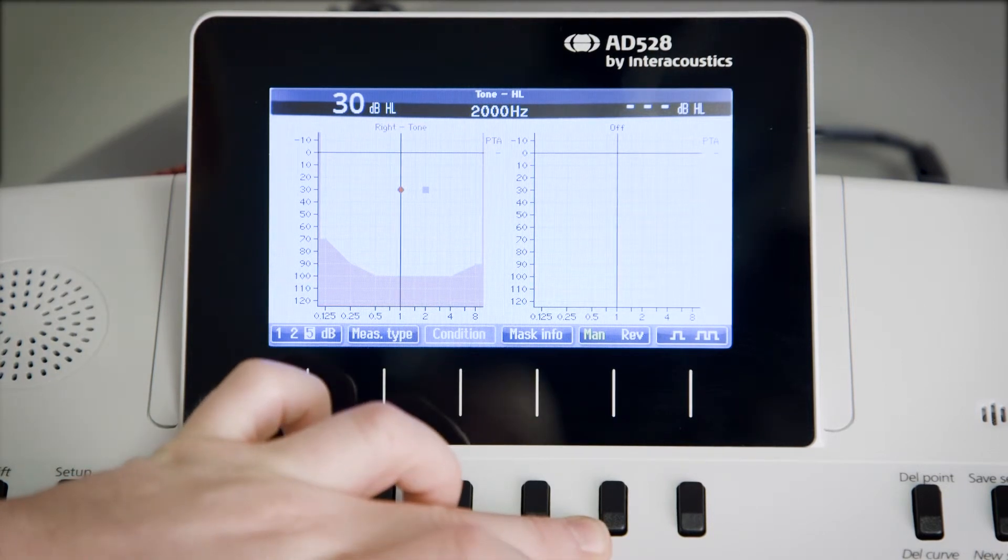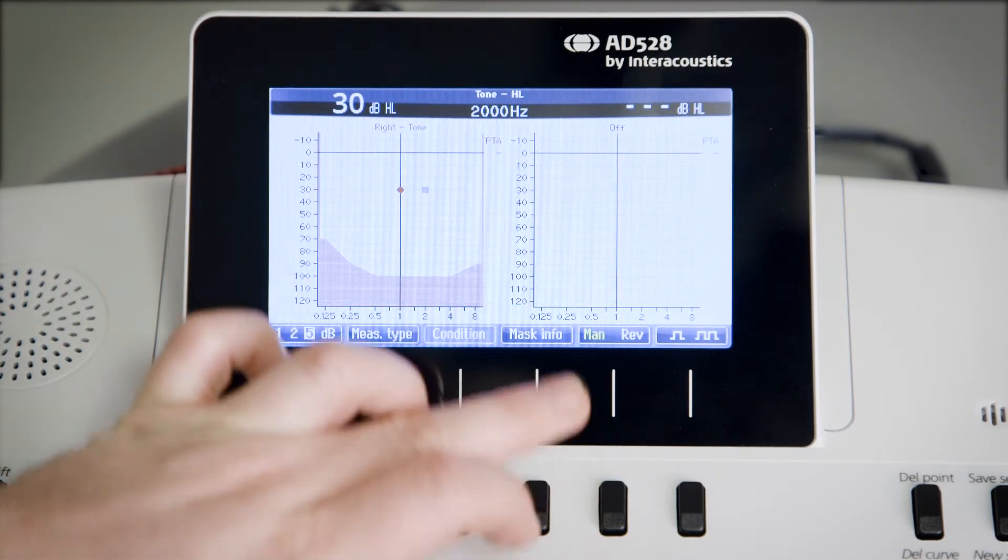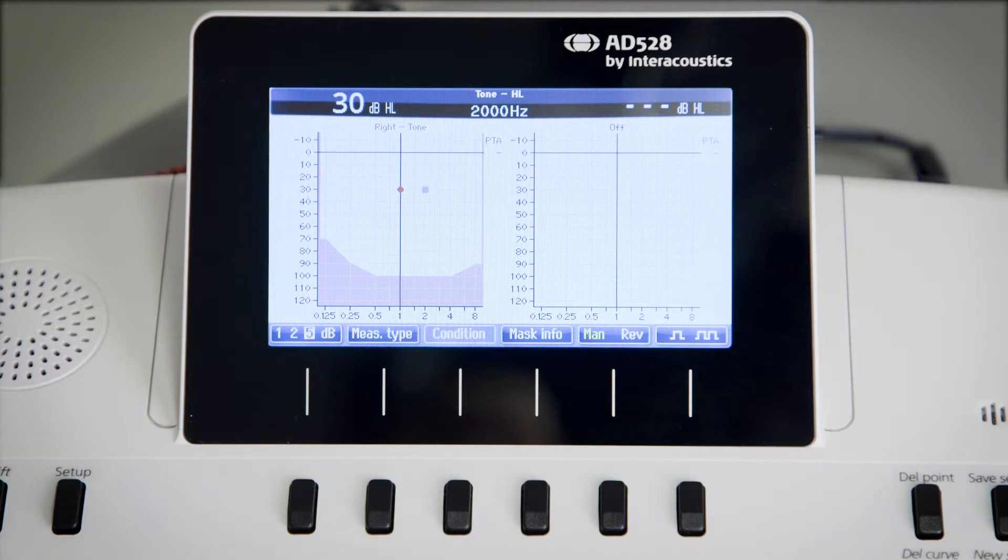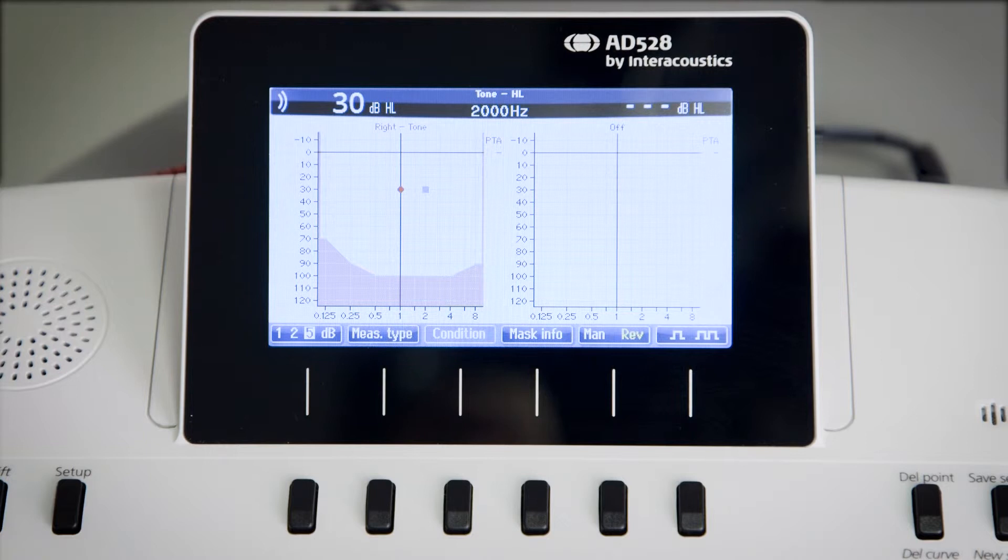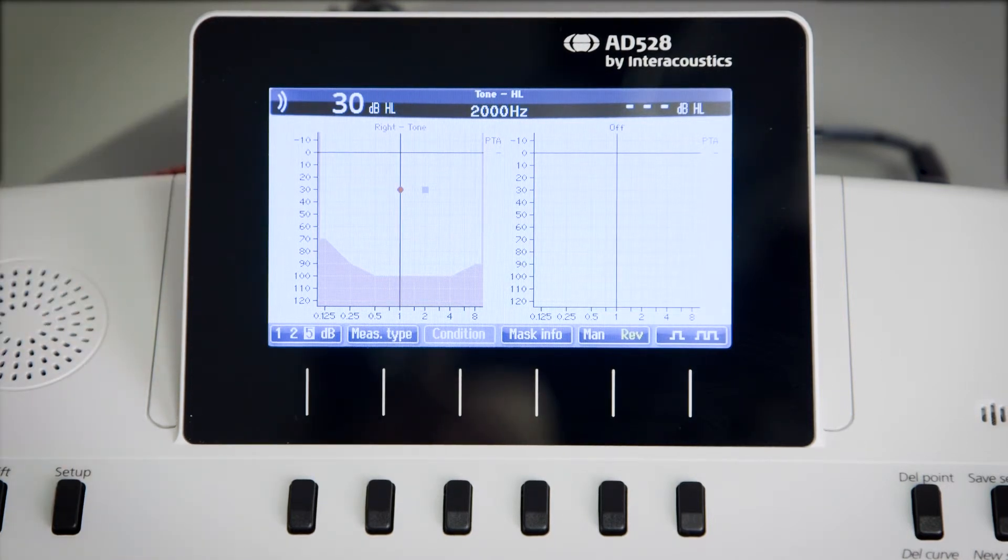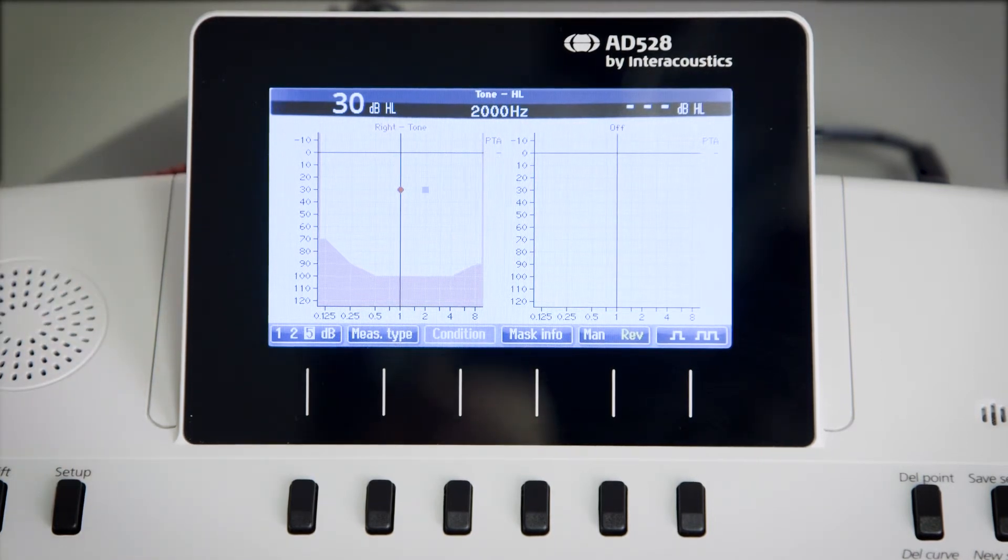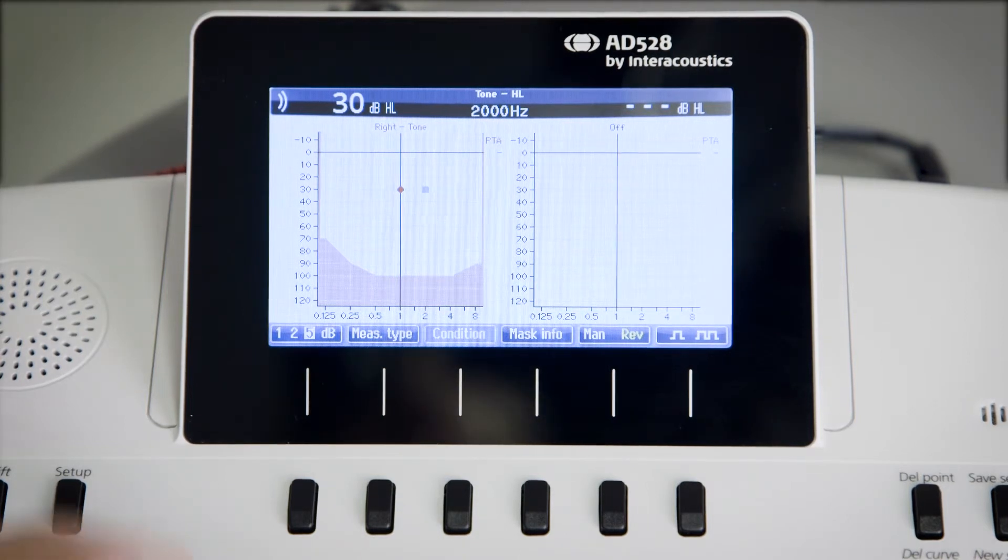On the fifth key, we have the manual reverse function. Manual means that you have the sound off all the time, and the sound will be present when you press the tone switch. Reverse is the opposite, meaning that the sound is on all the time and will come off when you press the tone switch.